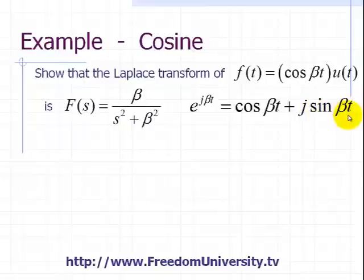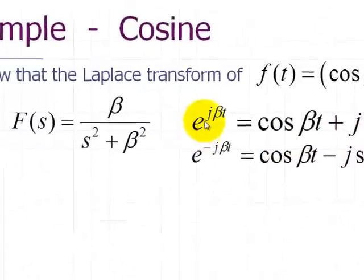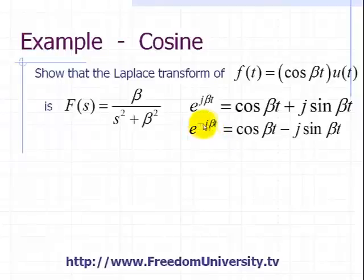And the y or imaginary part is sine beta t. Now the complex conjugate of this is that we put a minus j in the imaginary part. So we have here, and therefore that corresponds to e to the minus j beta t.